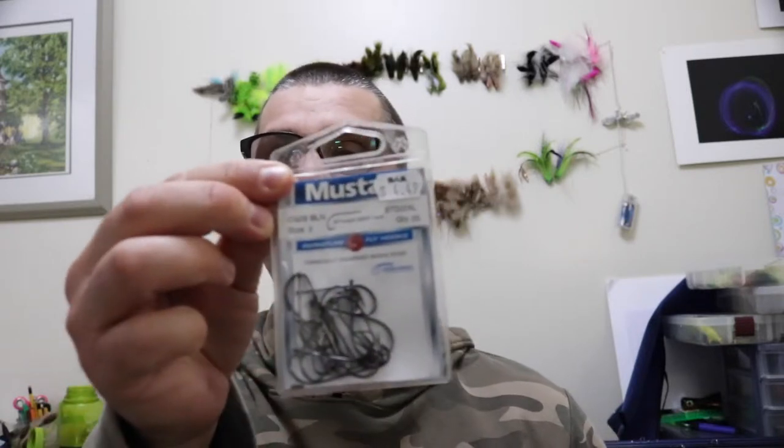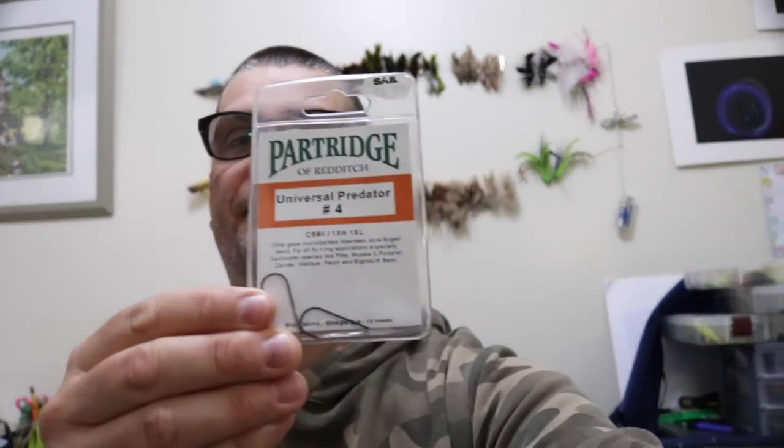It's a pretty easy fly, not complicated. I'm running a couple different hooks - the C5-2S right in size two, and I also run the Partridge Universal Predator in size four. The four size is finer wire and smaller.